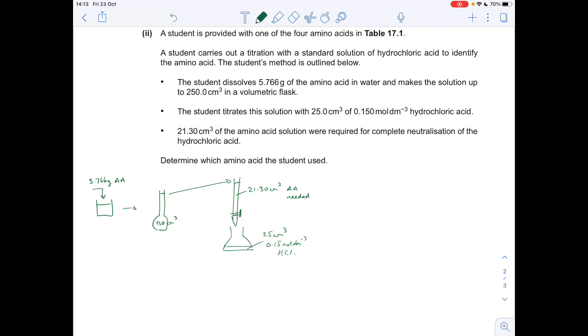Right, we'll get into the calculation then. So the first thing we can work out is the moles of HCl: concentration times volume, 0.15 times the 25 cm cubed, but it's got to be in dm cubed, 0.025, and that comes out at 3.75 times 10 to the minus 3.